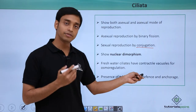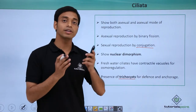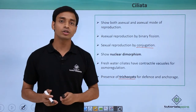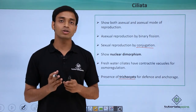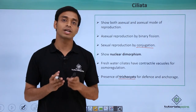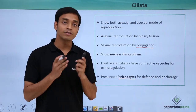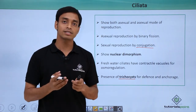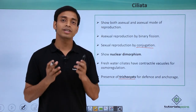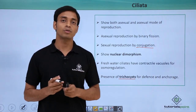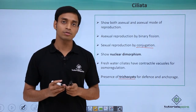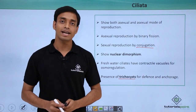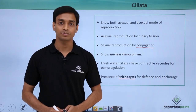They also have presence of special structures known as trichocytes, which help in defense and also help in anchoring with the host. In this video we have talked about the group of protozoans known as Ciliata, their cilia, and their various characteristics. I hope you have understood and liked this video. Thank you.